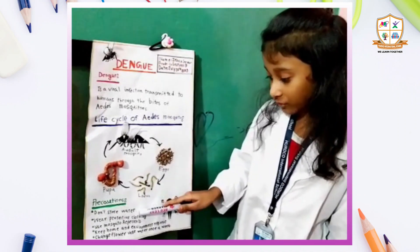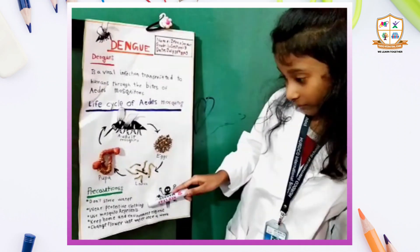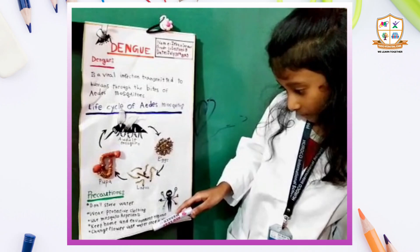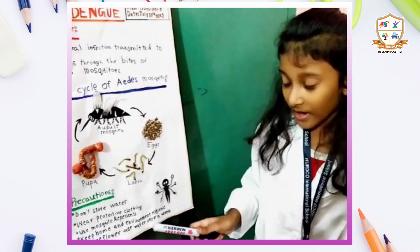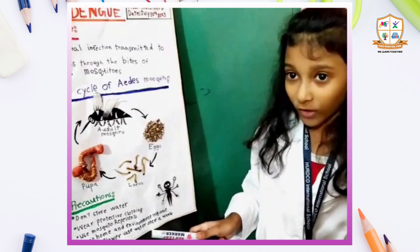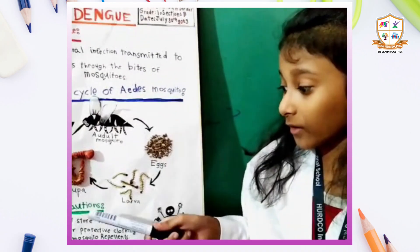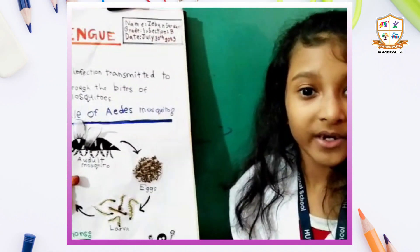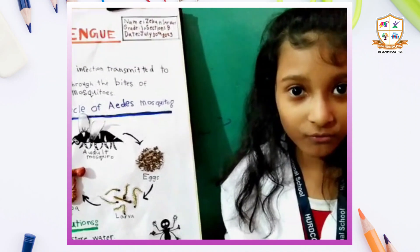The precautions to stay away from Aedes Mosquitoes: do not store water, wear protective clothing, use mosquito repellent, keep your home clean and hygienic, and change flower-based water once a week. If we follow these precautions then we will be away from Aedes Mosquitoes.